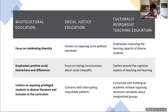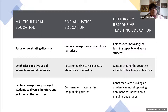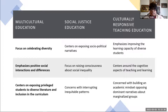One thing to notice about both multicultural education and social justice education is that both models are more about movements — about inclusion, diversity, or raising awareness on social inequality. The emphasis on improving learning capacity for diverse students is very low on the hierarchy. Culturally responsive teaching, by contrast, emphasizes improving the learning capacity of marginalized students, focuses on cognitive aspects of teaching and learning, building an academic mindset, and opposing dominant narratives about marginalized groups and their abilities to learn academic material.